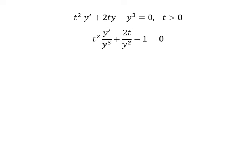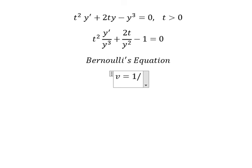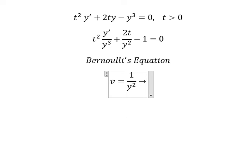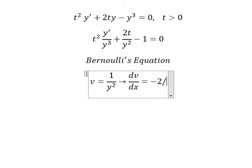That is about Bernoulli's equation. So I will put v equal to 1 over y squared. We take the first derivative for both sides, and we have negative 2 over y to the power of 3.